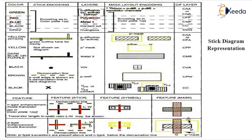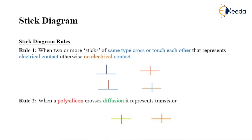Both mask layout representations are shown: polysilicon crossing n-diffusion forms an n-type transistor, and polysilicon crossing p-diffusion forms a p-type transistor. Wherever there is p-diffusion in the mask layout, it should be represented with a yellow surface over the mask. Next, there are some rules for stick diagrams.